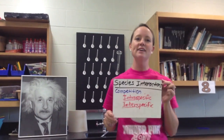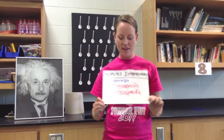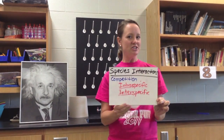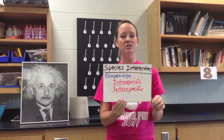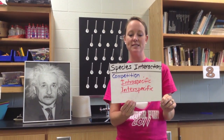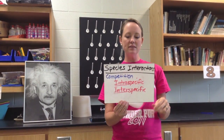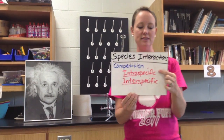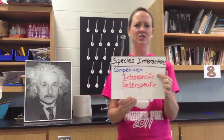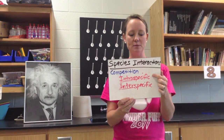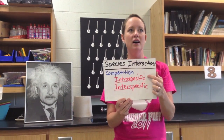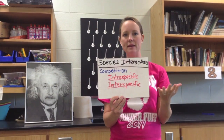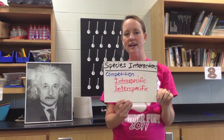The last thing we're going to look at today are species interactions within ecosystems. The first one is competition. There's competition in any ecosystem because resources exist in limited supply. There are two types of competition. Intraspecific is competition between members of the same species — for example, two males of the same species competing for a mate, or two birds of the same species competing for a nesting site.